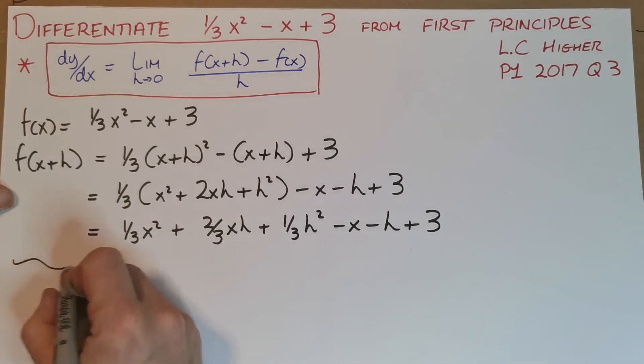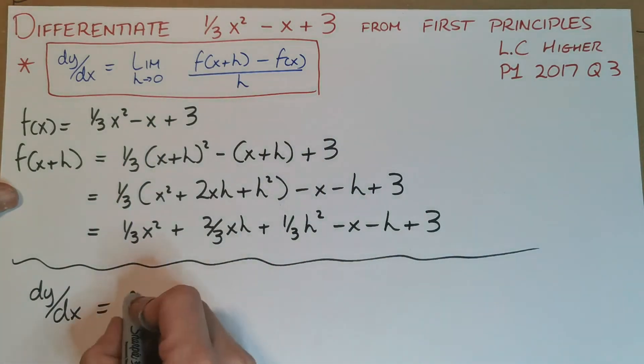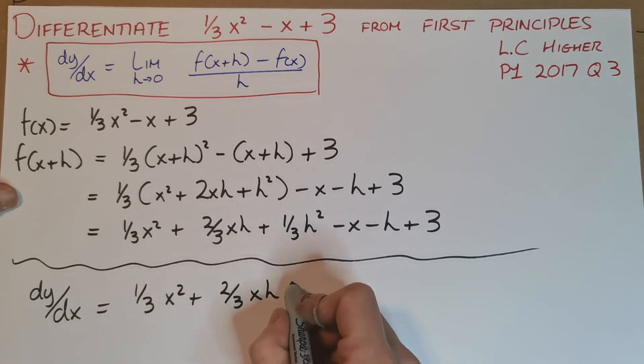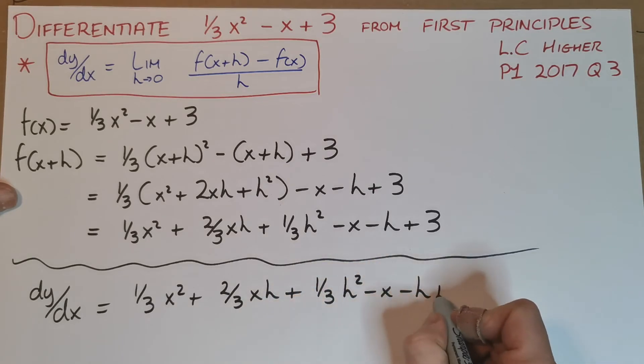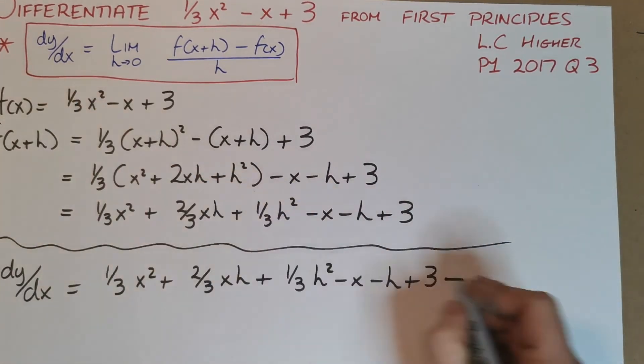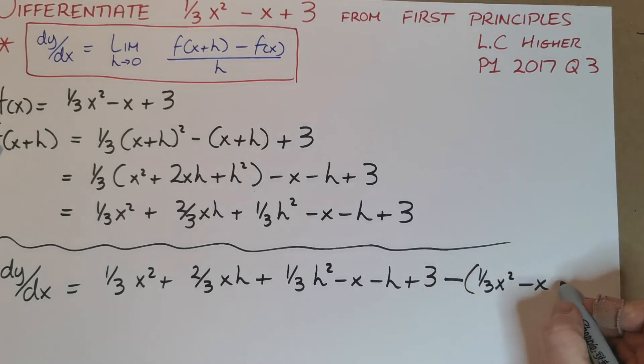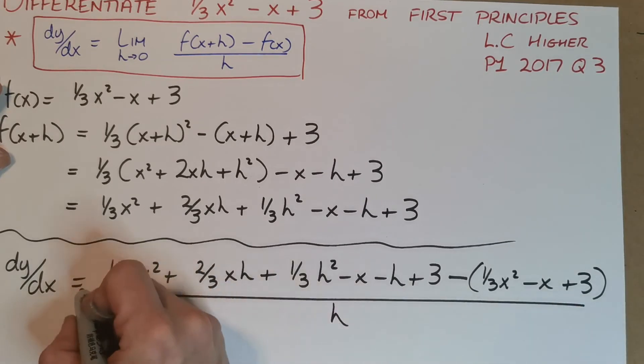Now let's put them into our formula. We have everything we need. So our dy/dx is going to be equal to—it's f(x+h), this long stuff here—so that's (1/3)x² + (2/3)xh + (1/3)h² - x - h + 3, then minus f(x) which is (1/3)x² - x + 3. That's pretty long, isn't it? And then that's all going to be divided by h. And of course I forgot the limit as h goes to zero here.